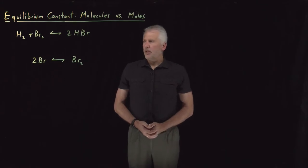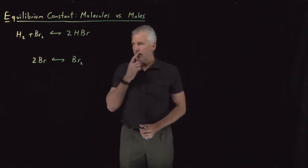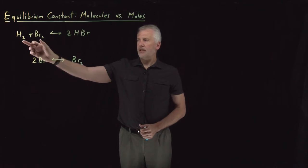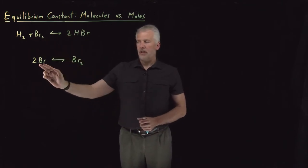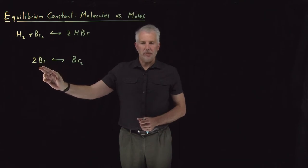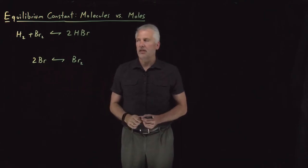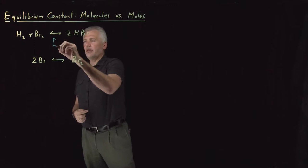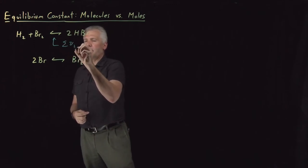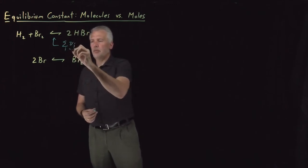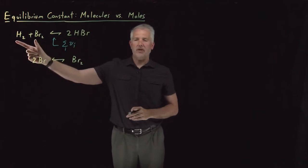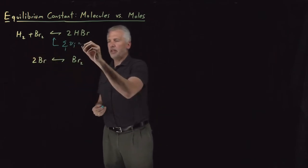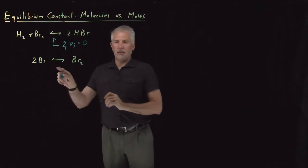Let's pay attention to the difference that takes place when we have a reaction with the same number of molecules on each side compared to a reaction with a different number on the reactant side than the product side. On the reactant side, if I add up the stoichiometric coefficients — remembering that product-side coefficients are positive and reactant-side ones are negative — in the top reaction those add to zero, in the bottom they don't.